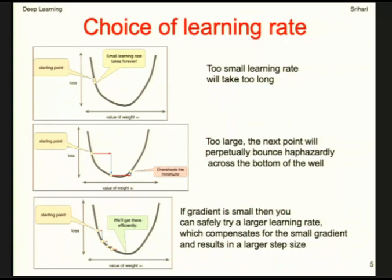Second-order methods compute curvature by using not just the gradient but also the second-order (Hessian-based) step. However, there are caveats: the Hessian must be positive definite, and in higher dimensions you deal with saddle points — like a saddle on a horse — as well as plateaus. So even applying curvature information can be complicated.